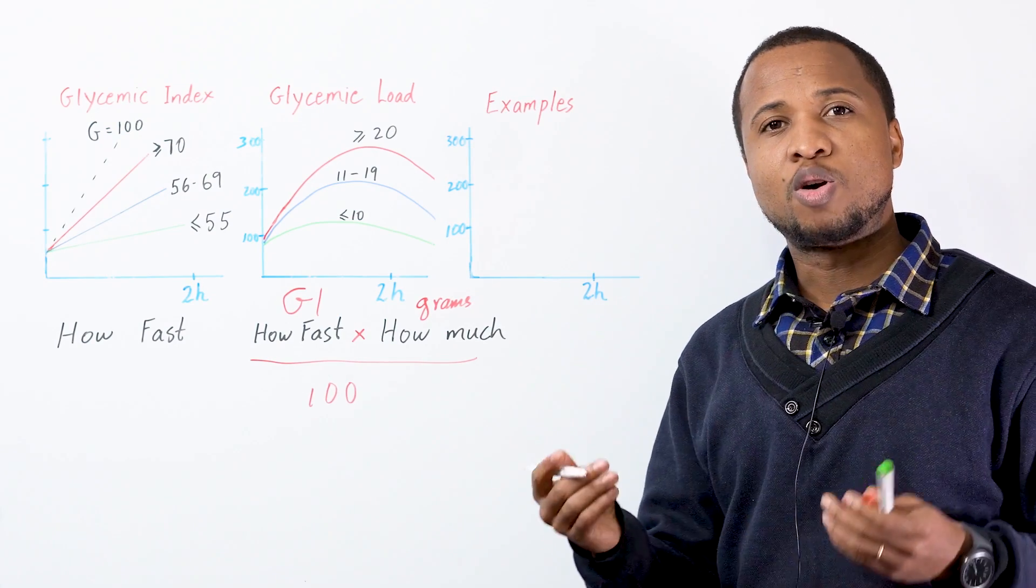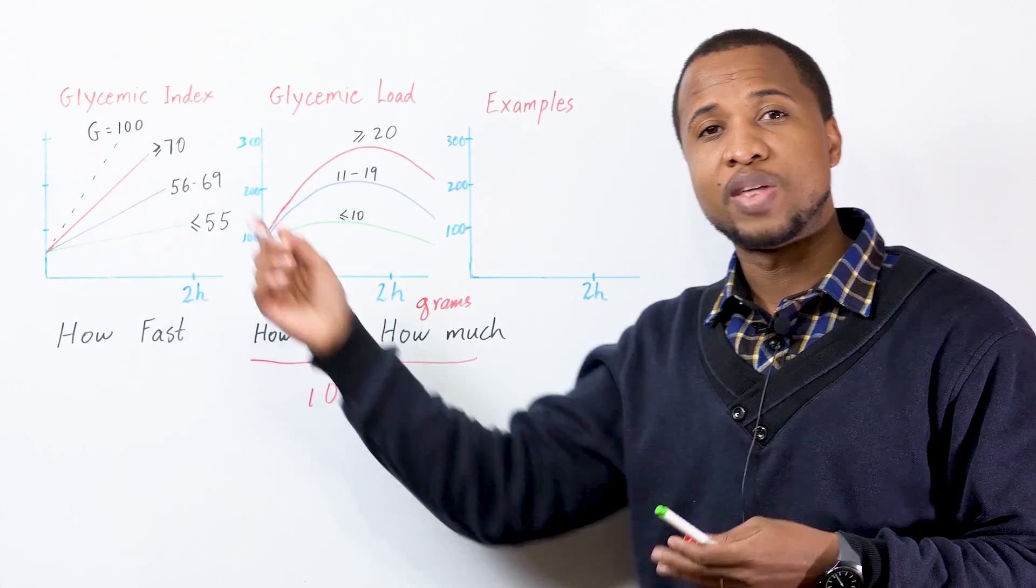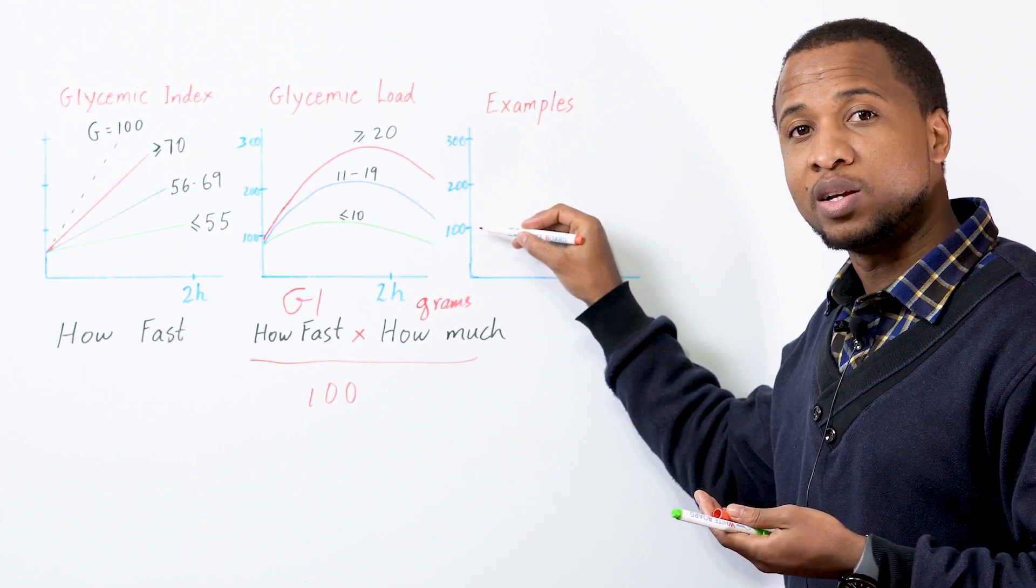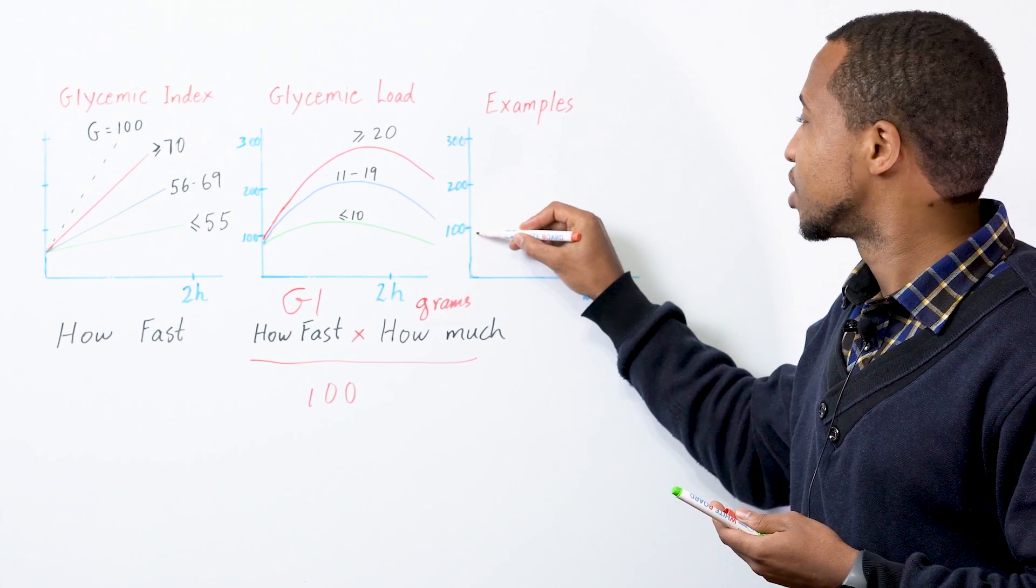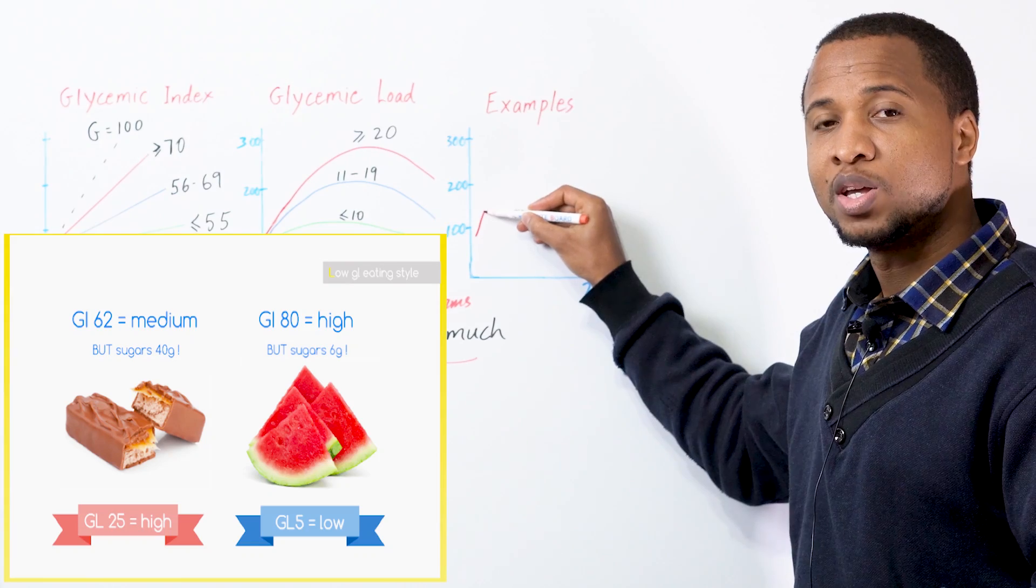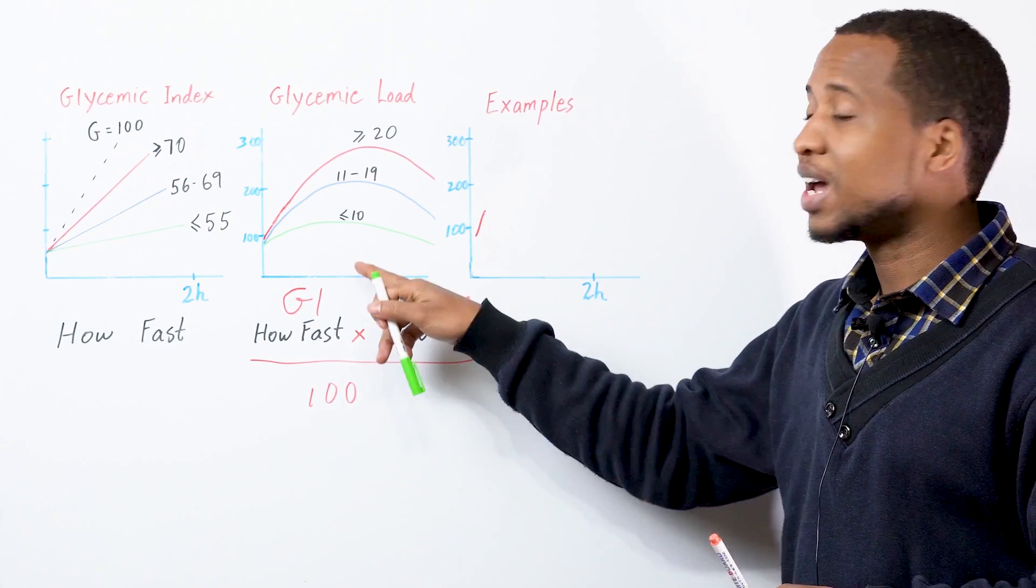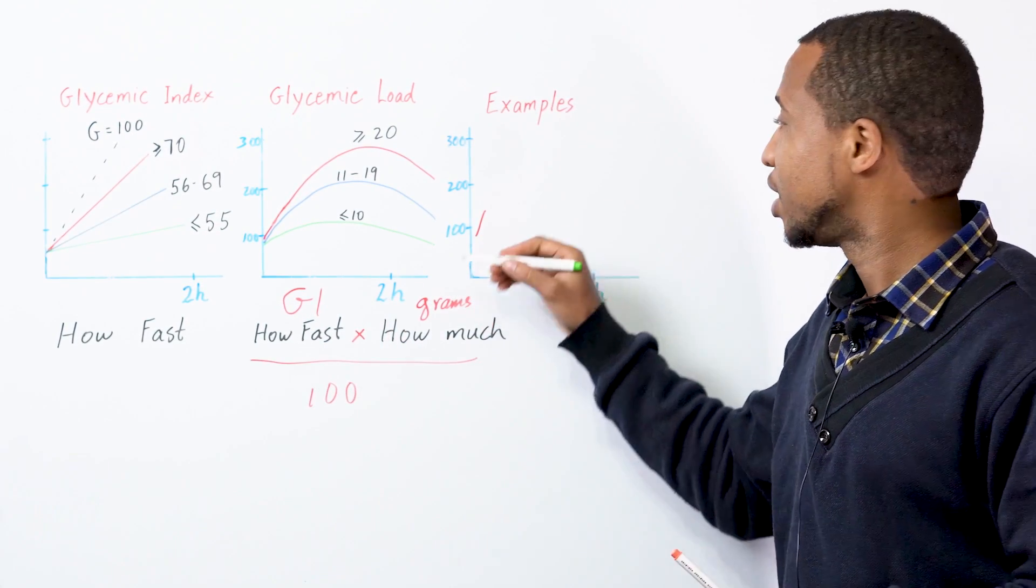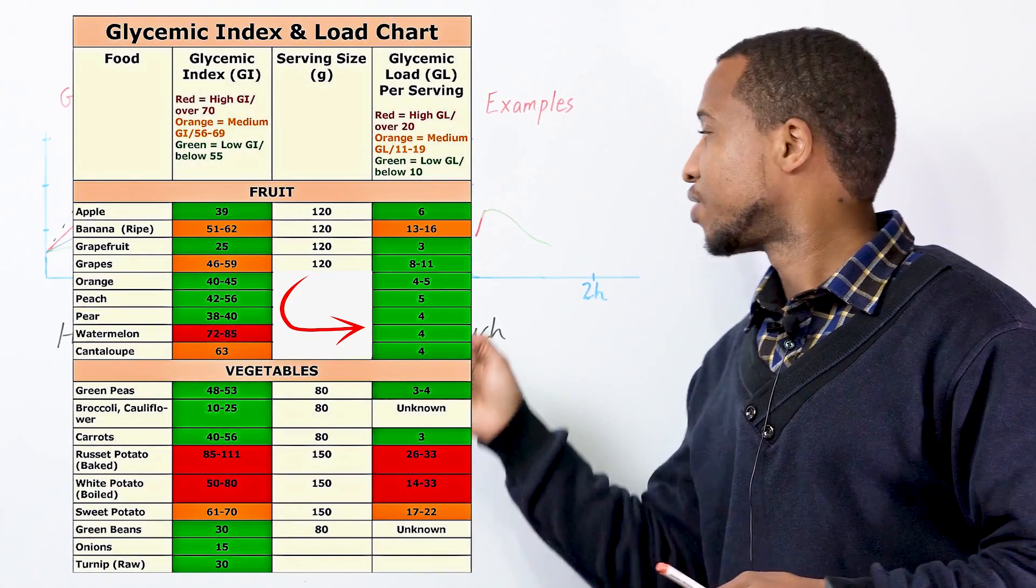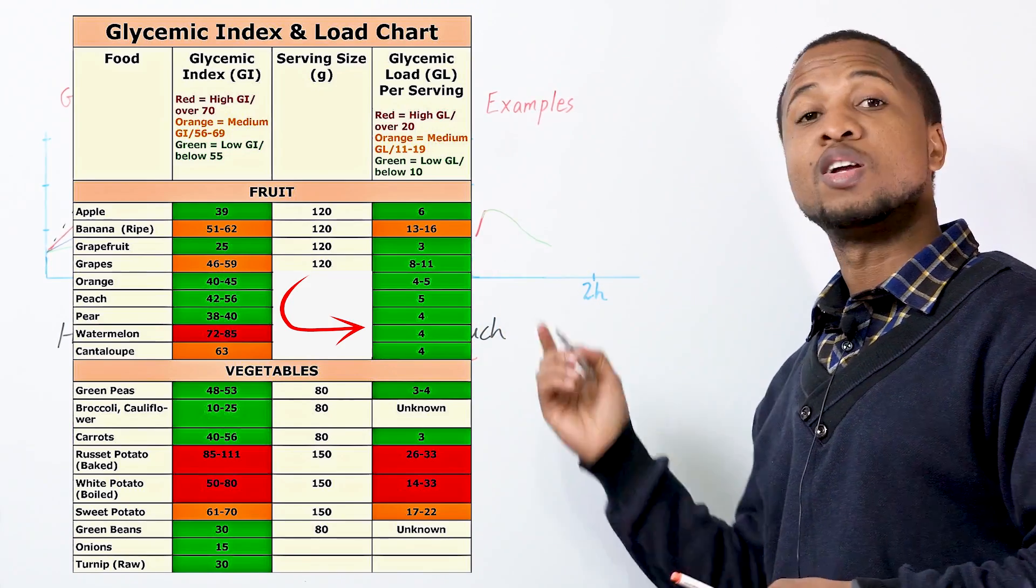Now, for you to understand why this one is better than glycemic index, we'll go back to watermelon. Watermelon has a GI of more than 70, so that means it is fast. Changes to sugar quickly. Now, the problem is that when it starts, it starts fast, but it doesn't have a lot of carbs to change to sugar. Most of the watermelon is water. So, for the glycemic load, it's not red. It is green.